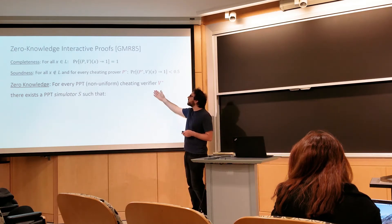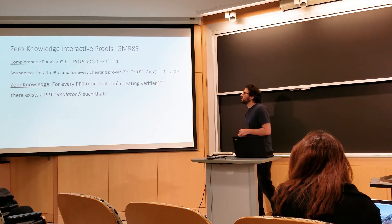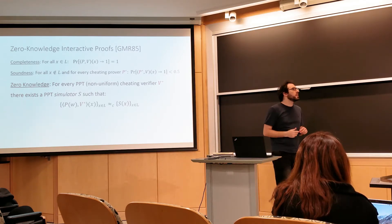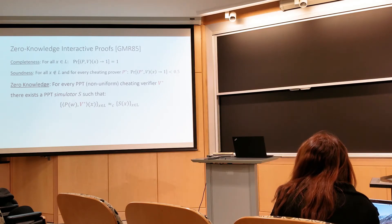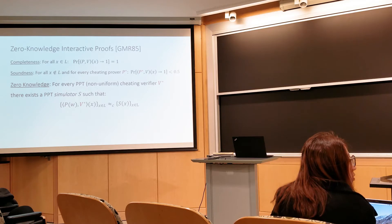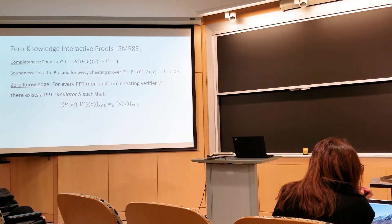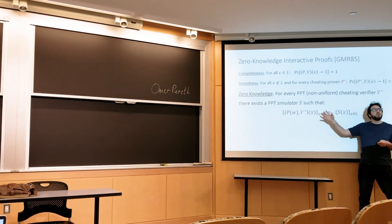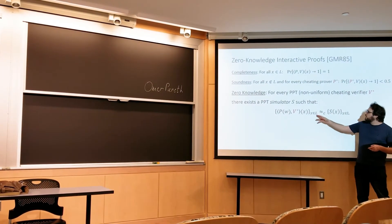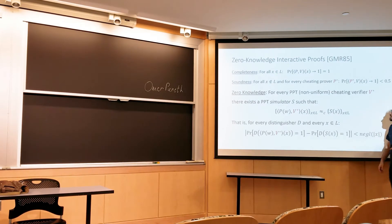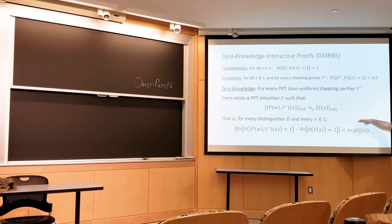For every probabilistic polynomial time non-uniform cheating verifier V*, there exists an efficient machine called a simulator. The simulator's job is to produce the view of this cheating verifier when it interacts with the honest prover. We look at a sequence of statements x in the language, and consider the view of the verifier interacting with the honest prover given the real witness w. We want the simulator — even without knowing a witness, only the statement — to produce output computationally indistinguishable from the verifier's view in the real interaction.